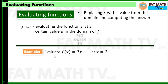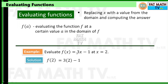For example, given that f of x equals 3x minus 1, and you are asked to evaluate f of x at x equals 2, the notation for that is f of 2. That means you replace x with a value from the domain — in this case, replace x with 2. So copy 3 times 2 instead of x, write 2, and then copy minus 1.